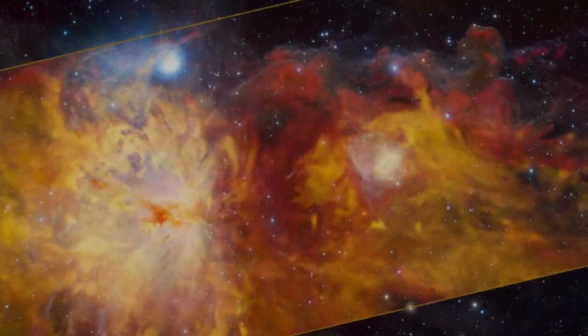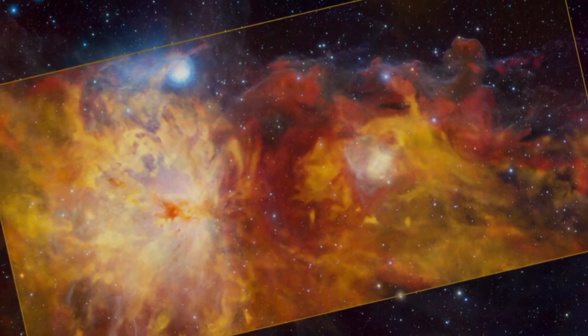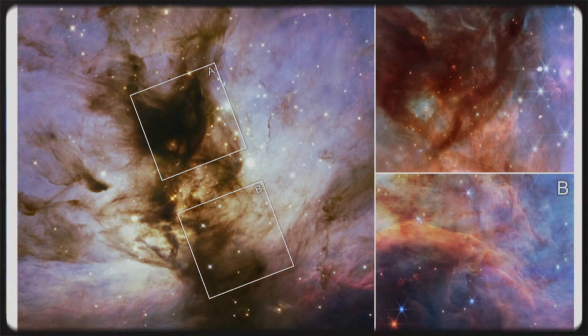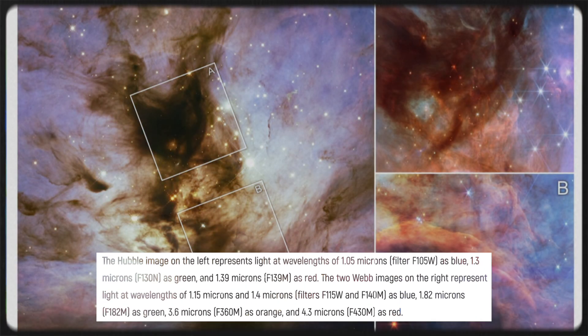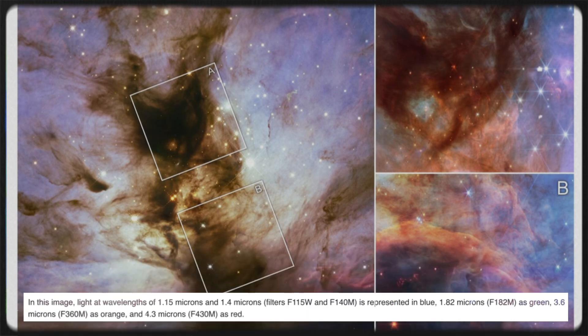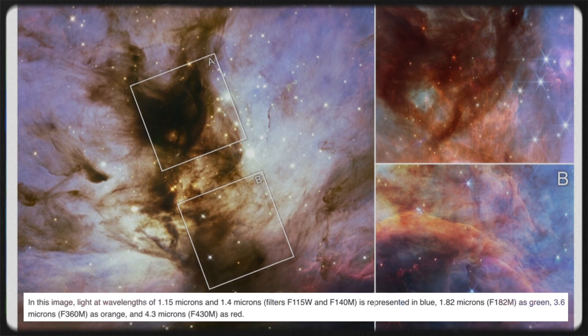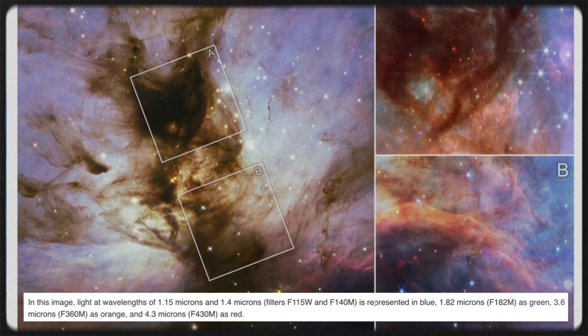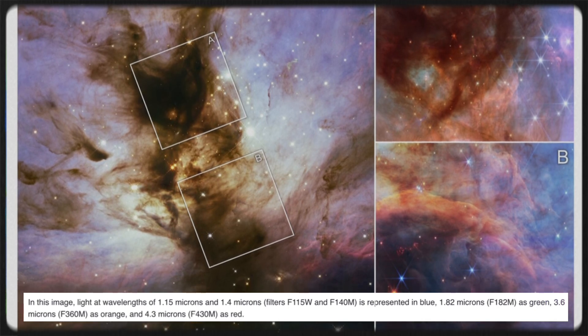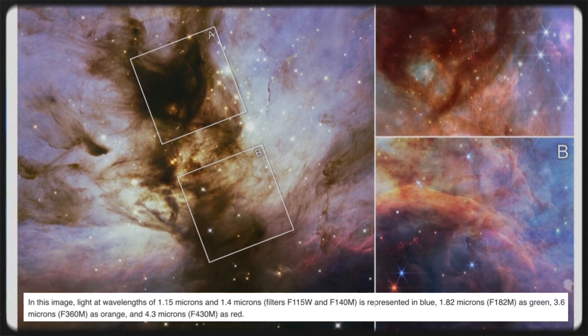What looked like an opaque cloud in Hubble's view is unveiled in Webb's as a transparent structure lit up by young stars and faint brown dwarfs. In this visualization, blue light represents 1.05 microns, green is 1.3 microns, and red is 1.39 microns in Hubble's view. In Webb's images, it gets even more intricate: blue's at 1.15 and 1.4 microns, green at 1.82, orange at 3.6, and deep red at 4.3 microns, each revealing different layers of this stellar nursery.